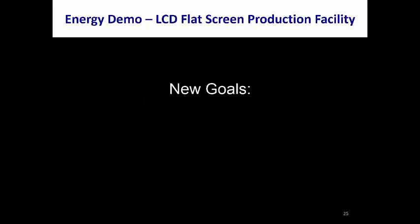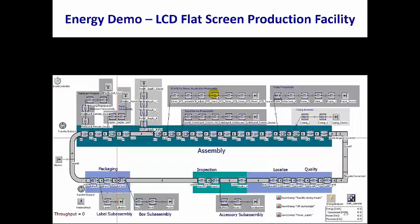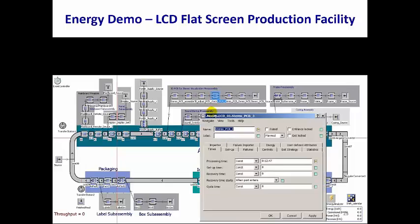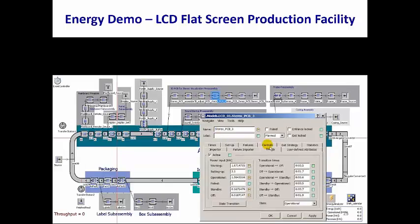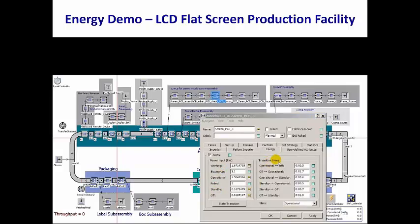Since PlantSimulation can now model, analyze, and optimize energy consumption, we set new goals to reduce energy consumption without decreasing throughput. The first step is to specify power inputs in kilowatts in the energy tab of the stations for all its states, including working, setting up, operational, failed, standby, and off. We also specify the transition times between states.